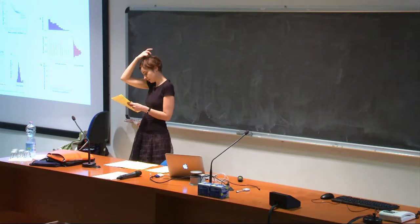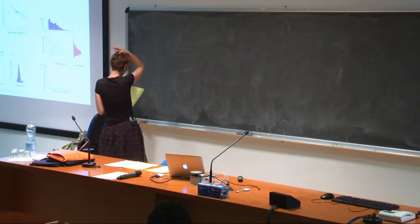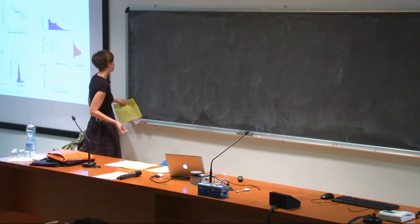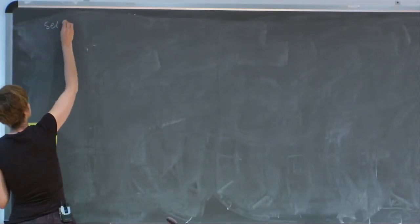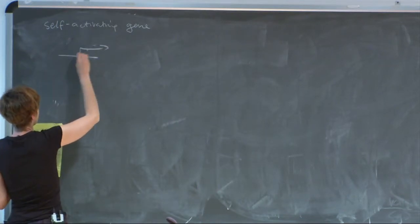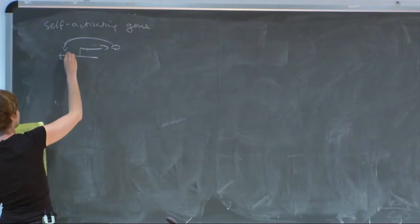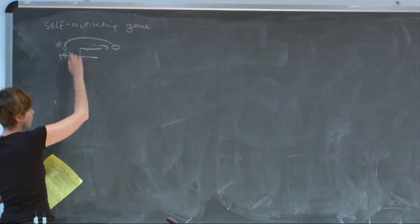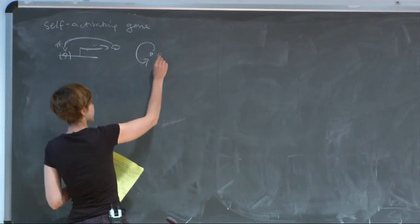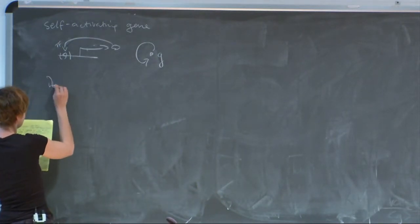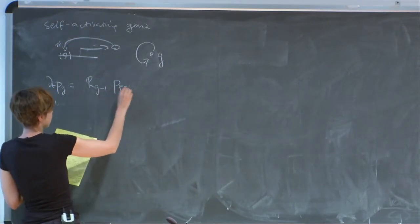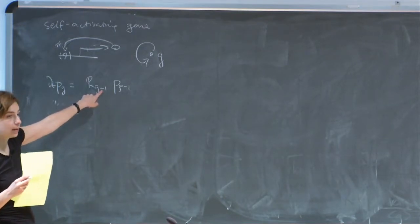So where did we leave off? We started off with the master equation. Now let's consider what's called the self-activating gene. We have the same picture as before — we produce proteins, but now we're going to assume that these very proteins act as transcription factors for the same gene. So we have a system with feedback: a gene that produces proteins that activate its own expression. We can write down the master equation for this, just like we were doing.